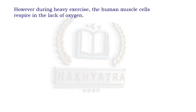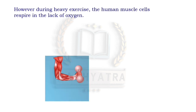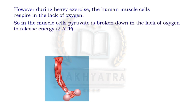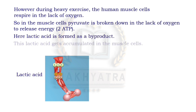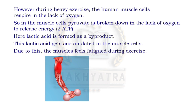However, during heavy exercise, human muscle cells respire in the lack of oxygen. In the muscle cells, the pyruvate is broken down in the absence of oxygen to release energy, producing ATP. Here lactic acid is formed as a byproduct and gets accumulated in the muscle cells. This is the reason why our muscles feel fatigue during exercise.